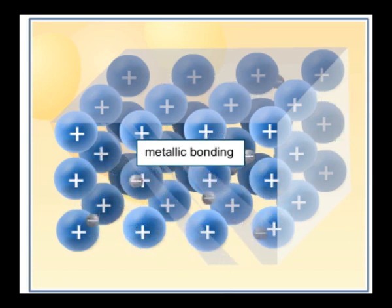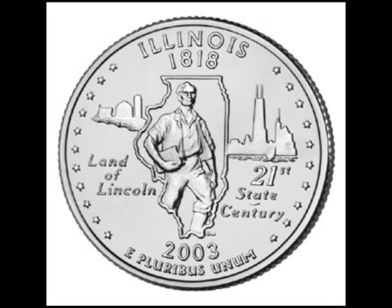We call this metallic bonding. The nuclei are in a lattice, and the delocalized electrons are free to move. Because of metals' low electronegativity, the electrons are delocalized.